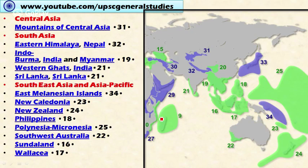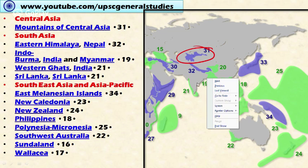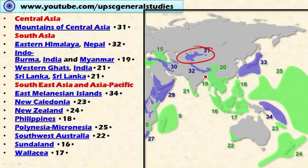In Central Asia, we have the Mountains of Central Asia, present in countries like Kazakhstan, Kyrgyzstan, Tajikistan, and Uzbekistan. In South Asia, we have the Eastern Himalayas — including Nepal — and the Indo-Burma area covering Myanmar, the Western Ghats of India, and Sri Lanka.